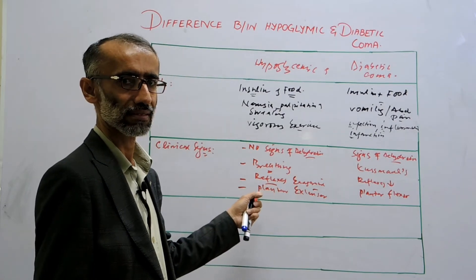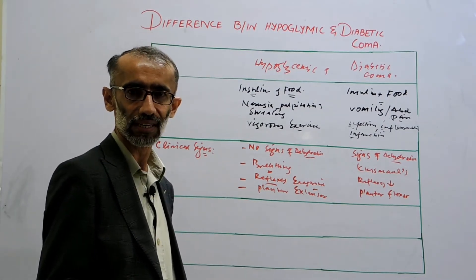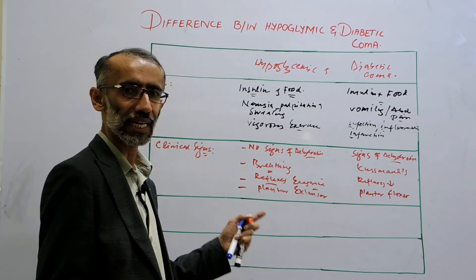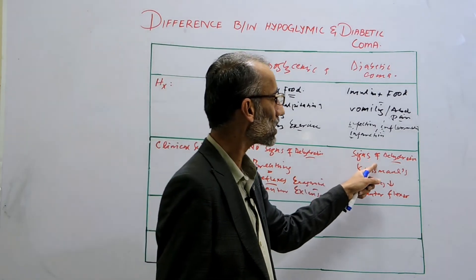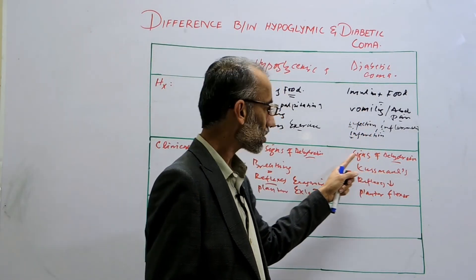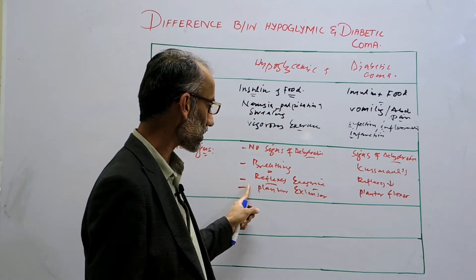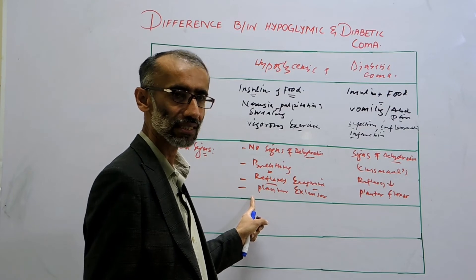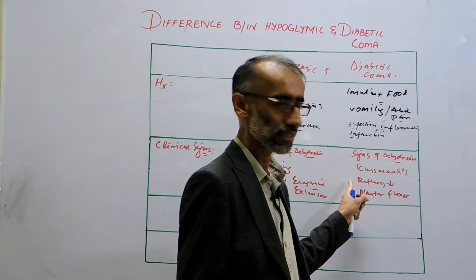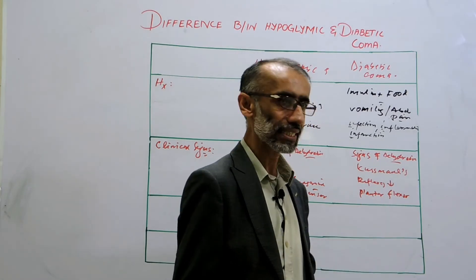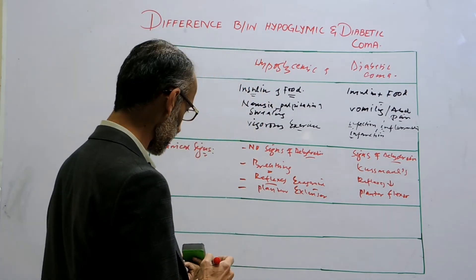These are the clinical signs for differentiation between hypoglycemic and diabetic coma. Signs of dehydration present — think diabetic coma. Signs of dehydration absent — think hypoglycemic coma. Normal breathing, exaggerated reflexes, plantar up-going — think hypoglycemic coma. Abnormal Kussmaul breathing, reflexes diminished, plantar down-going — think diabetic coma.